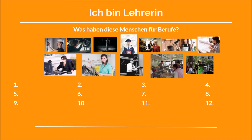Now let's practice with some examples. The first picture is the engineer on the top left corner — it's a man, so der Ingenieur. The next one is a mechanic, lying below a car repairing something — der Mechaniker. The fourth one is a man standing on a stage, so he's an actor — der Schauspieler. The next one is a student — der Student.